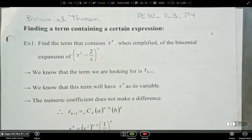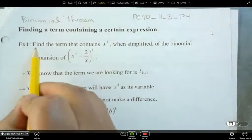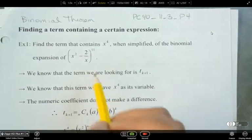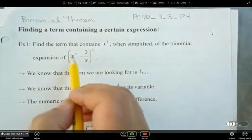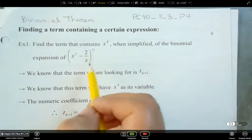In this one, we're going to be looking at finding a specific term. Here we want to find the term that contains x to the power of 4 when simplified of the binomial expansion of x squared minus 2 over x all to the power of 11.